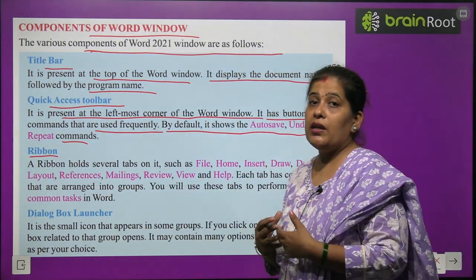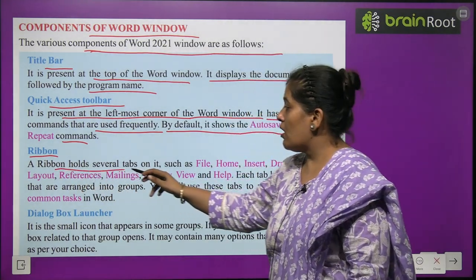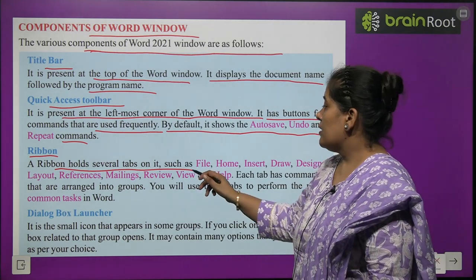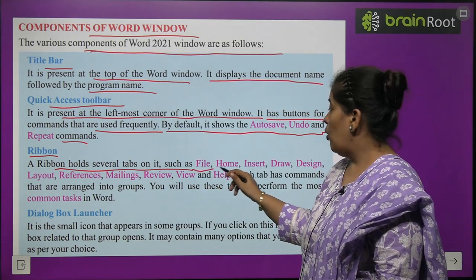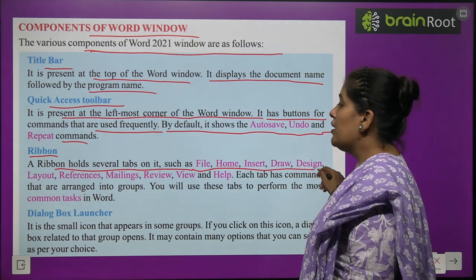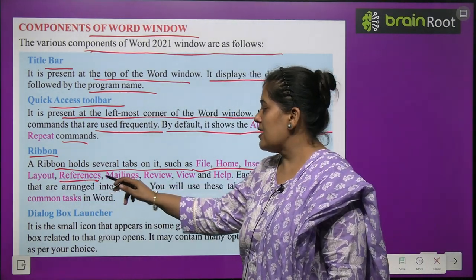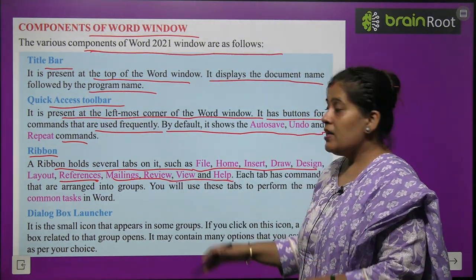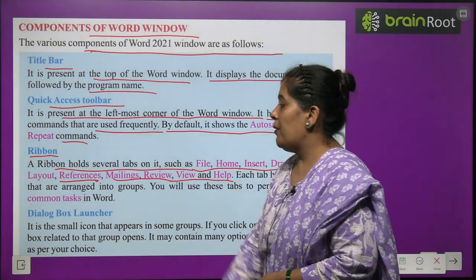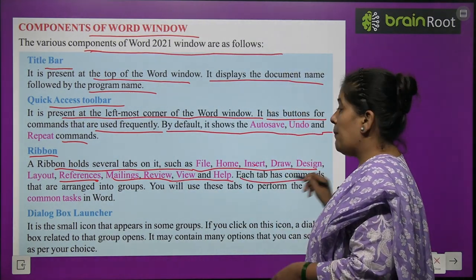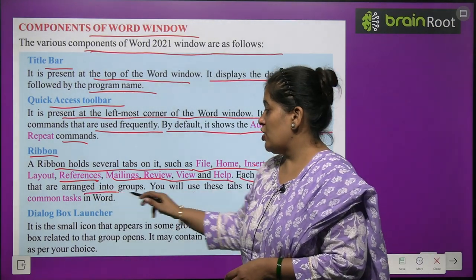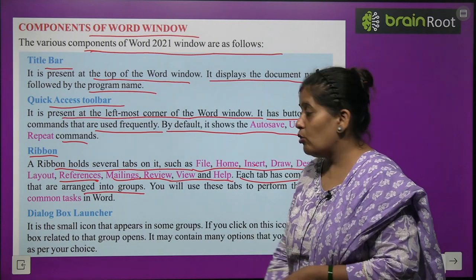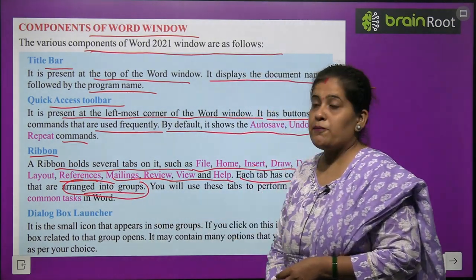The ribbon contains many tabs: File, Home, Insert, Draw, Design, Layout, References, Mailing, Review, View and Help — all these tabs are in the Ribbon. Each tab has commands that are arranged into groups. You will use these tabs to perform the most common tasks in Word.